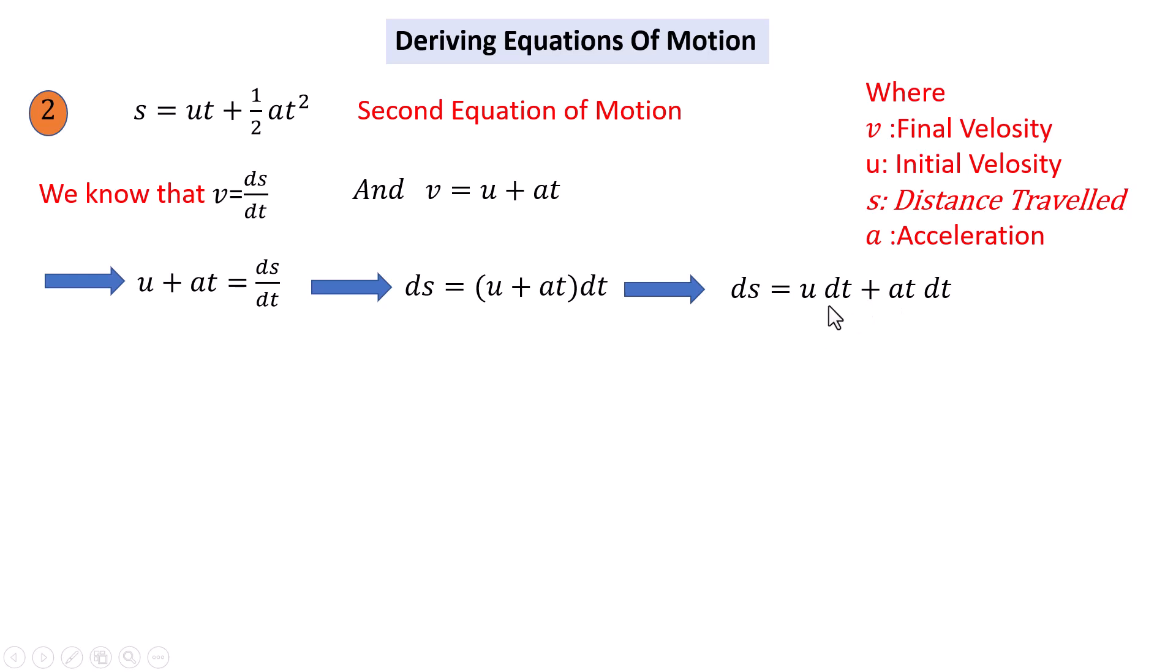Let's integrate both sides of this equation. We get the integration of ds from 0 to s equals the integration of u dt from 0 to t plus the integration of at dt from 0 to t.